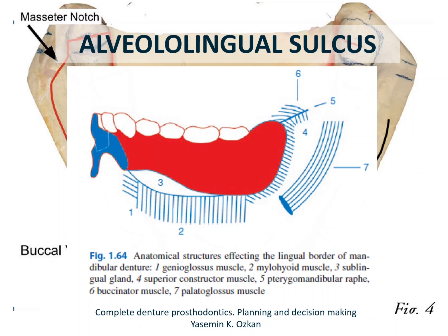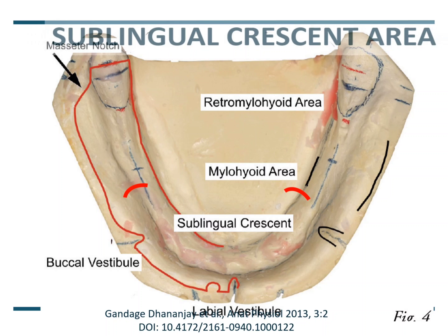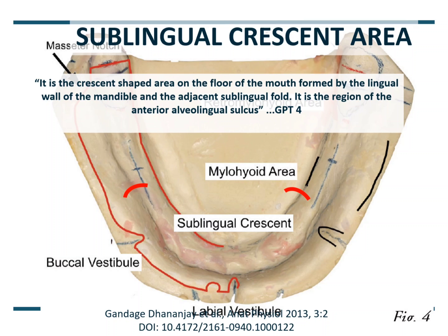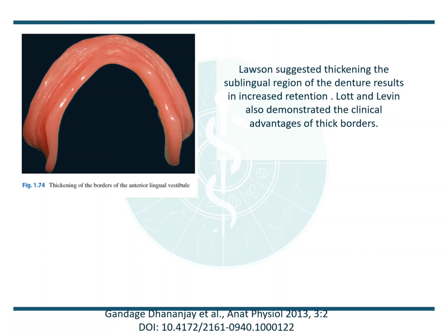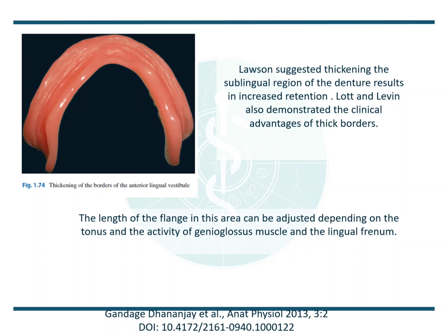The sublingual crescent area extends from the lingual frenum to the mylohyoid bridge and is mainly influenced by the genioglossus muscle, the lingual frenum, and a portion of the sublingual gland. GPT-4 describes it as a crescent-shaped area on the floor of the mouth bounded by the lingual wall of the mandible and the adjacent sublingual fold; it is the region of the anterior alveolingual sulcus. It influences the anterior lingual border of the denture. Lawson suggested that thickening of the sublingual region will increase retention, supported by Lott and Levin, who demonstrated clinical advantages of thick denture borders. The length of the flange can be adjusted depending on the tonicity and activity of the genioglossus muscle and the lingual frenum.